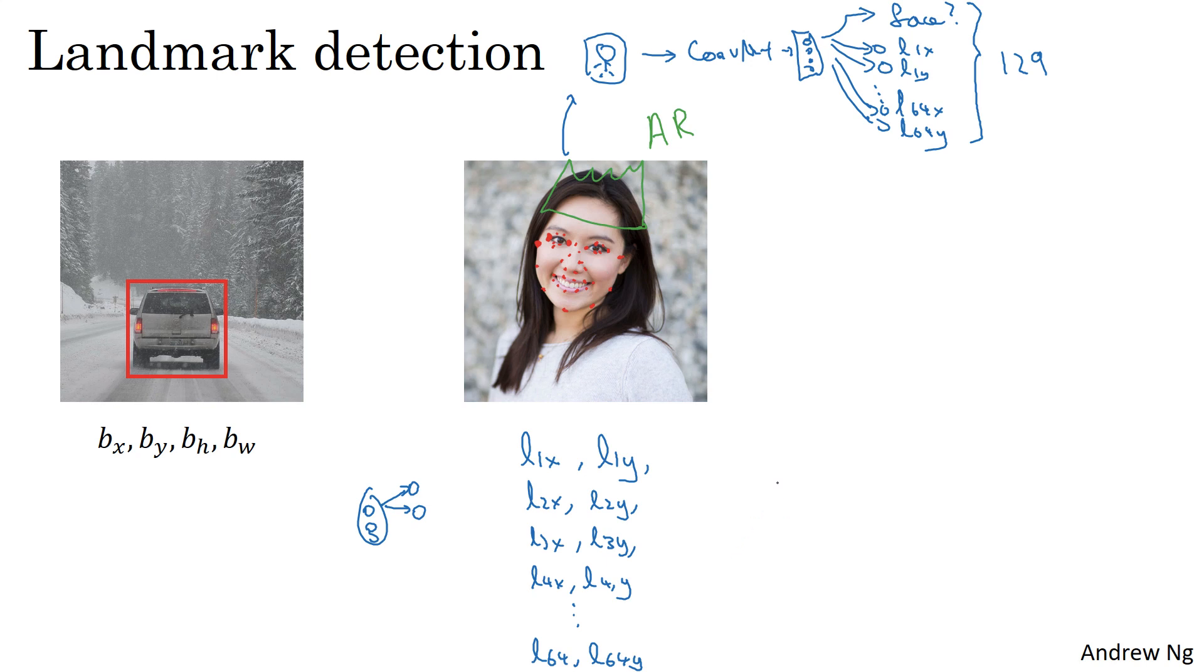Of course, in order to train a network like this, you will need a labeled training set with a set of images as well as labels Y where someone will have had to go through and laboriously annotate all of these landmarks.